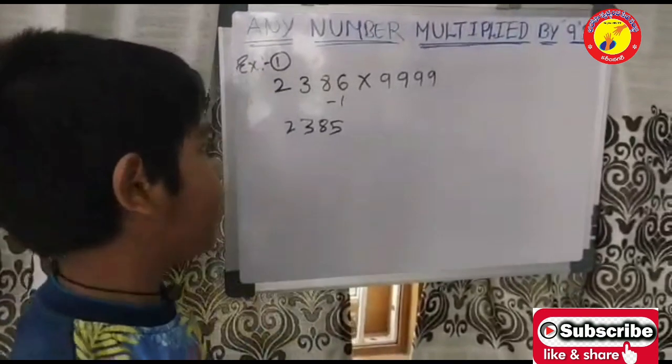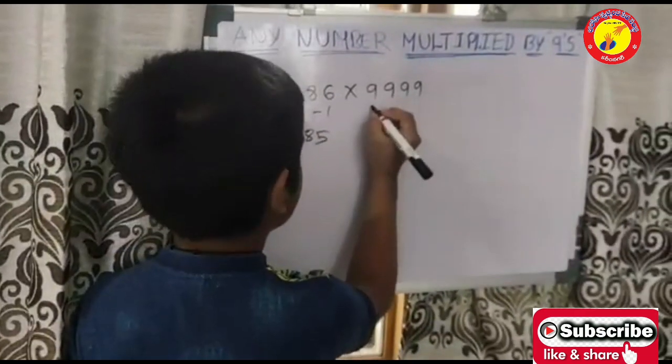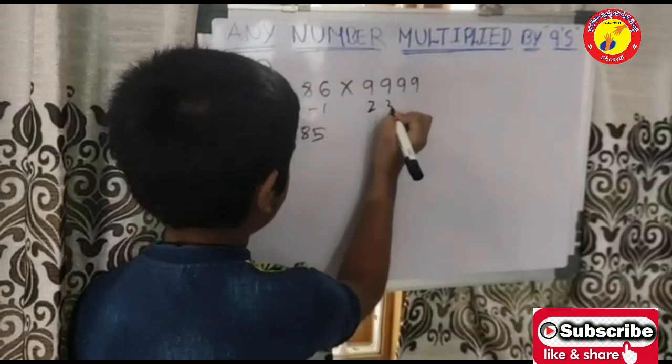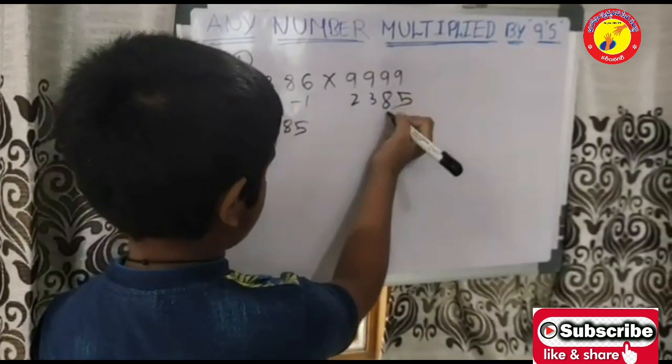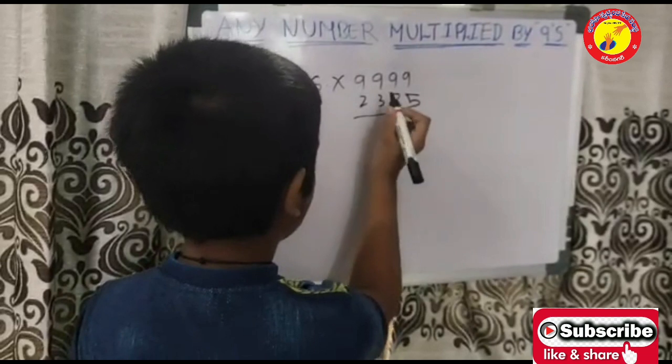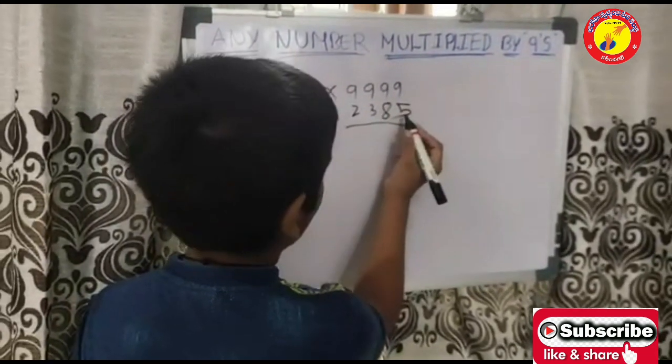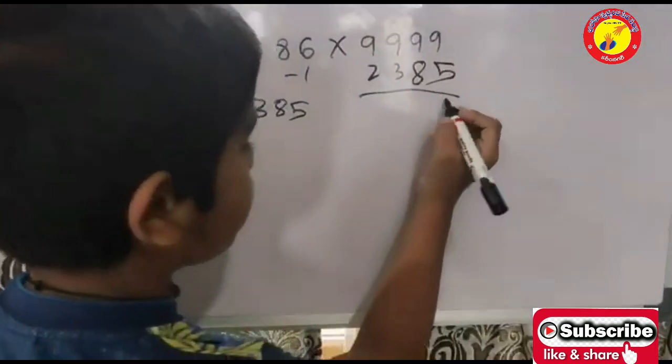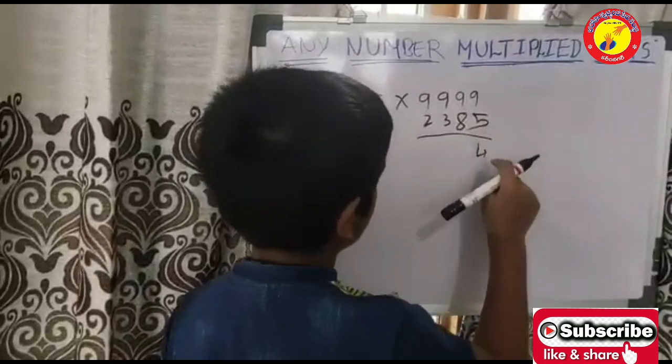Now, I will write this number here. 2385. Subtract this number from 9. 9 minus 5 is equal to 4.